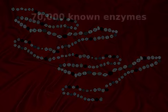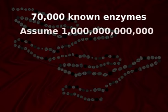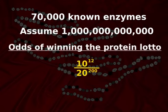Currently, there are around 70,000 known enzymes. So for good measure, we will increase that number to one trillion just to be safe. That will give us the odds of one trillion out of 20 to the 200th power of getting a hit.